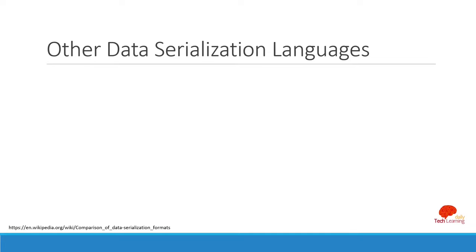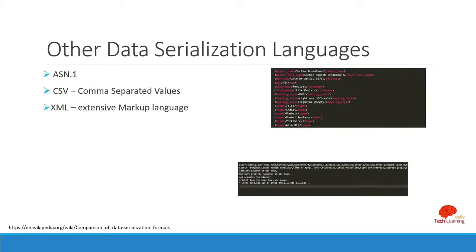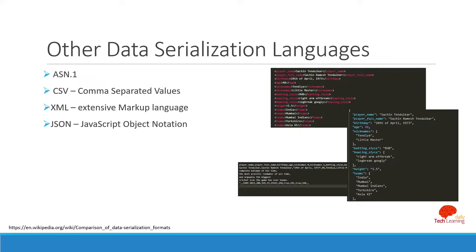There are several famous data serialization languages: ASN.1 (Abstract Syntax Notation One), CSV (Comma Separated Values), XML (Extensible Markup Language), JSON (JavaScript Object Notation), and SOAP. These are the currently popular data serialization languages. You can also read more on the comparison of data serialization formats on Wikipedia.